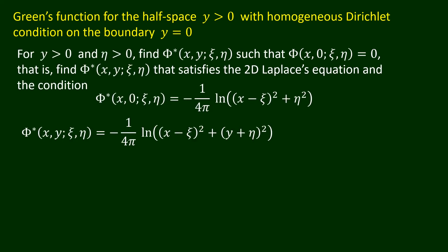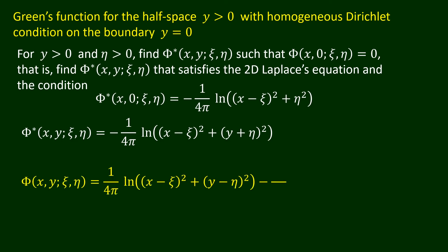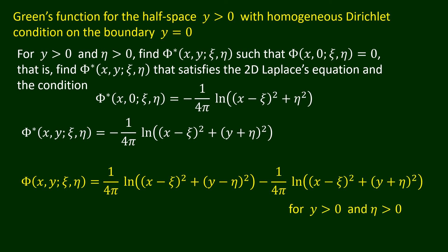Here is the constructed Green's function for the half-space y strictly greater than 0, with a homogeneous Dirichlet condition on the boundary y equals 0.